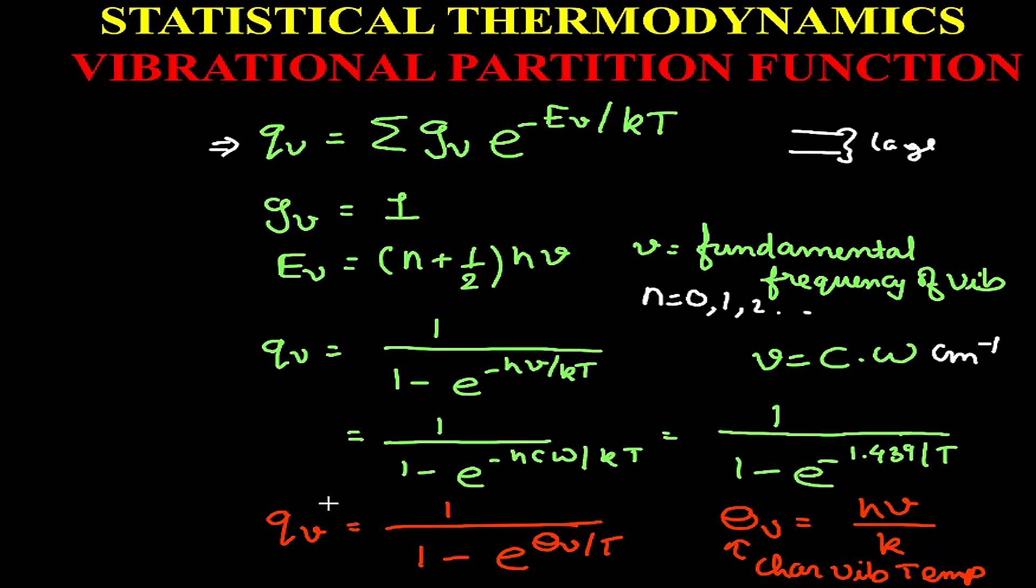When we substitute these values into the expression, h, c, and k are constants - Planck's constant, velocity of light, and Boltzmann constant respectively. Substituting and simplifying gives 1.439ω/T, and this expression can be used to calculate the vibrational partition function.